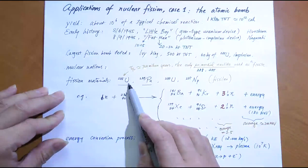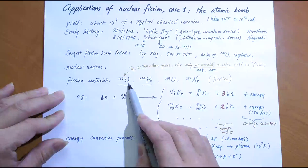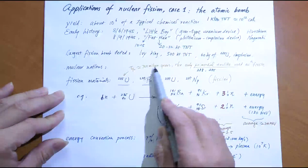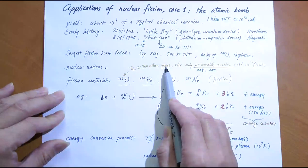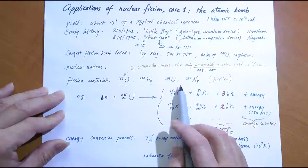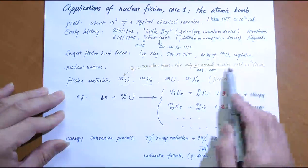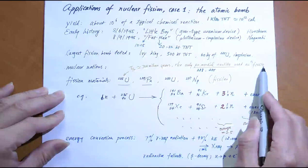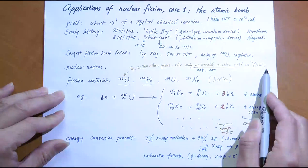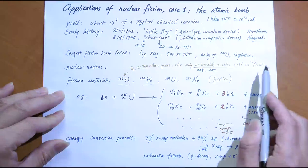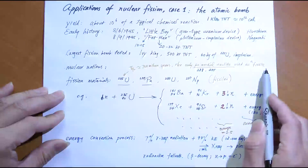Uranium-235 is a natural radioactive material with a half-life of 700 million years. It is the only primordial nuclide used as a fissile. A fissile is a material used in a fission bomb or fission nuclear power plant — it is able to sustain a chain reaction by itself.